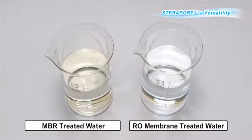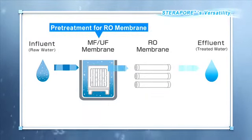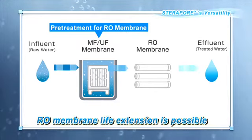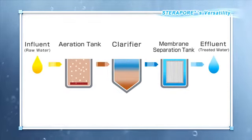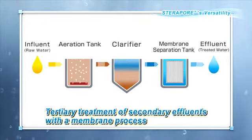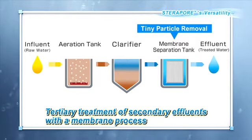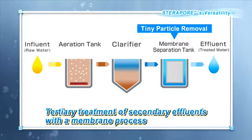RO membrane treatment can be used as a method for obtaining ultra-pure water and drinking water. RO membrane treatment is often preceded by pretreatment using MF membranes and UF membranes, which ensures a stable RO membrane treatment. Besides being used for MBR, SteriPore can be used as the membrane filter during the tertiary treatment of water treated using the conventional activated sludge method, allowing the further reuse of water.